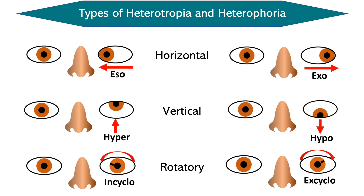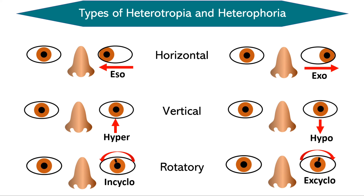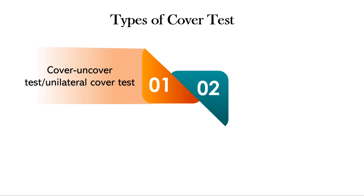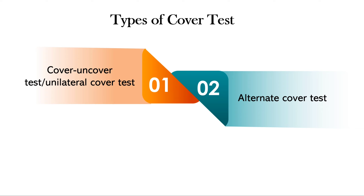That was a brief introduction to squint. Now moving on to the types of cover test. The cover test is basically of two types: the cover-uncover test, also known as the unilateral cover test, and the alternate cover test. The cover-uncover test is used to detect the presence of manifest squint or heterotropia.